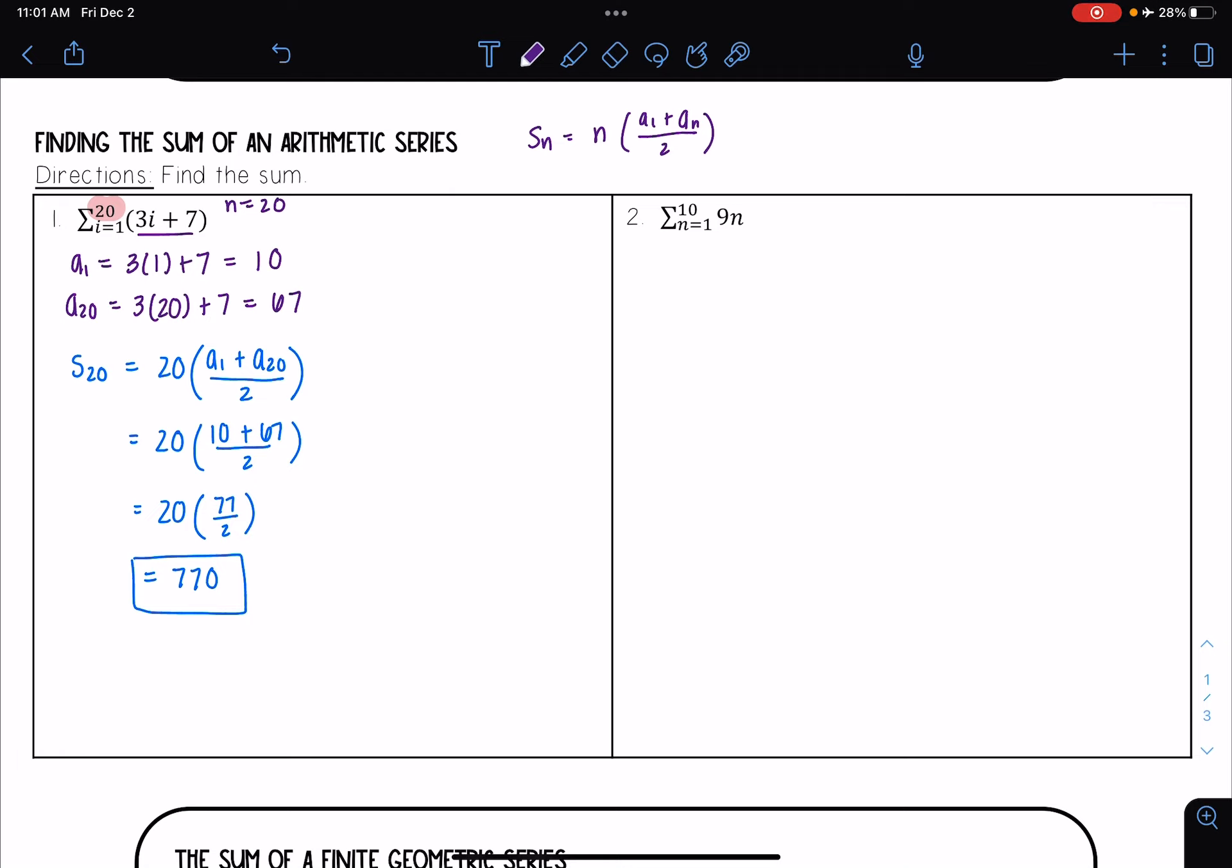Okay let's look at one more. So here I have the sum of n equals 1 to 10 of 9n. And so here my sum goes to 10. So that means that there are 10 terms. So I need to find what a1 is equal to and what a10 is equal to.